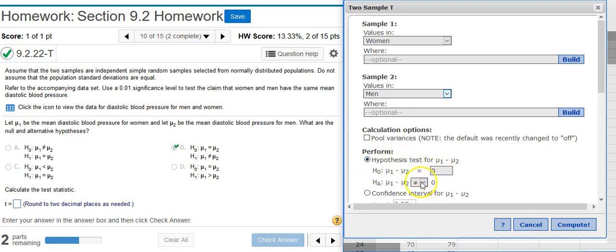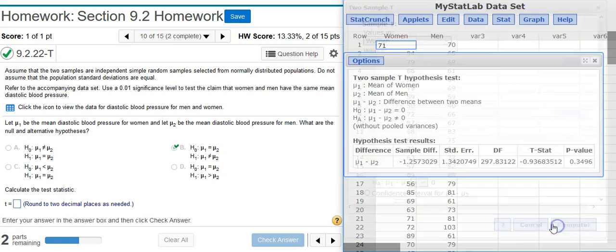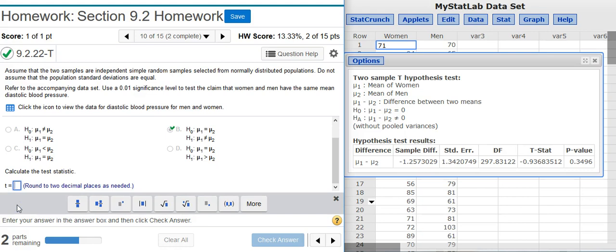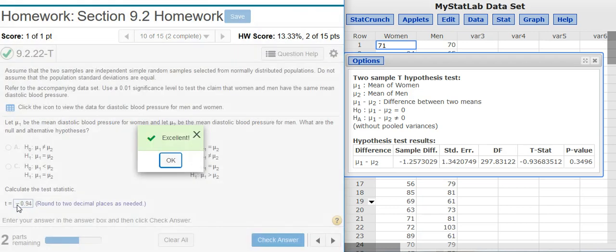Here, under Hypothesis Test, make sure these values match what you see over here. And notice the difference in the way that this is expressed. Here we're expressing it as a difference. Here we're expressing the two statements as being equal to each other. They're the same thing. If you just subtract mu2 from both sides, you're going to get the same thing over here. Not equal to, not equal to. That's what we want. Hit Compute. And here in my results window, the test statistic is always the second-to-last number in this table in my results window. I round to two decimal places. Excellent!